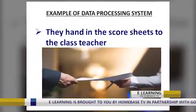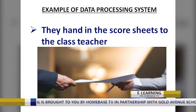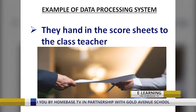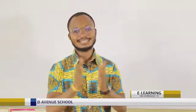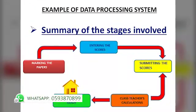Once that is done, the class teacher produces a report card for each student and a master report sheet of the class as well. You can see on the board a sample report card. This is what the class teacher went through — the data processing system — in order to get to the final end of term reports. Let's go through the stages in diagram: marking the papers, entering the scores, submitting the scores, class teacher's calculations, and finally the report card is ready.